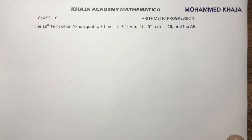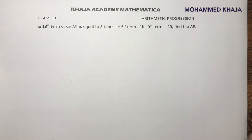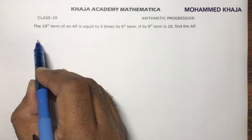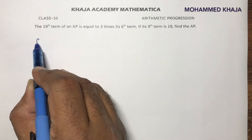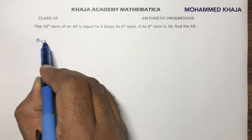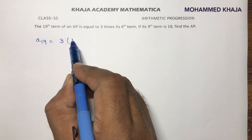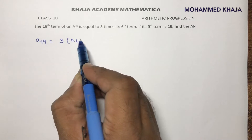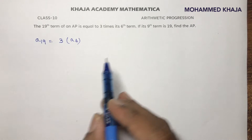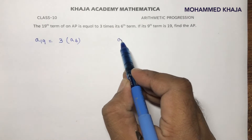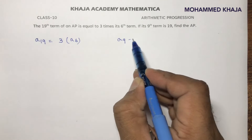The 19th term of an AP is equal to 3 times its 6th term. If the 9th term is 19, find the AP. So here, the 19th term of an AP is 3 times its 6th term and the 9th term is 19.